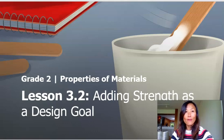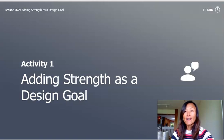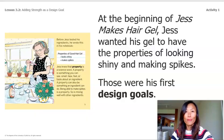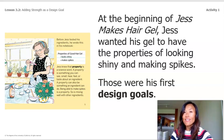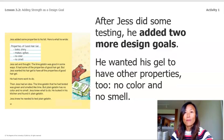In video activity one, 'Adding Strength as a Design Goal,' at the beginning of 'Jess Makes Hair Gel,' Jess wanted his gel to have the properties of looking shiny and making spikes — those were his first design goals. After testing, he added two more design goals: no color and no smell.